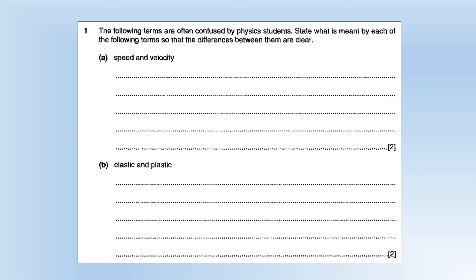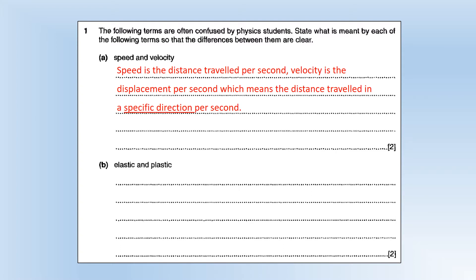Speed and velocity. Speed is the distance you are travelling every second, whereas velocity is the displacement per second. The difference between them is that displacement is distance in a specific direction. So velocity is the distance travelled per second, but in a specific direction.